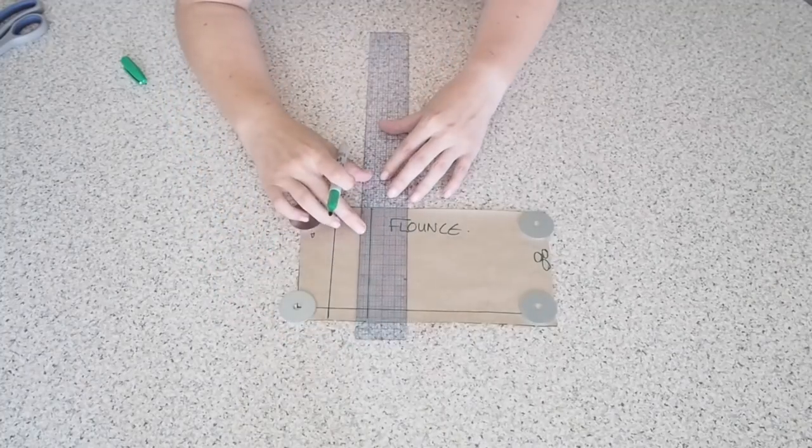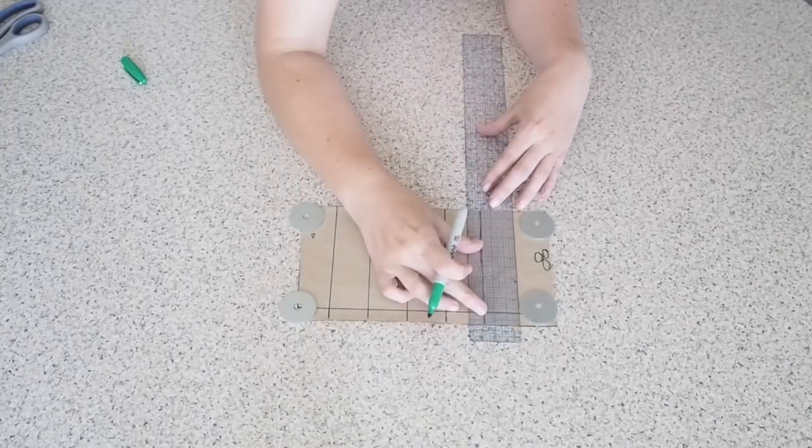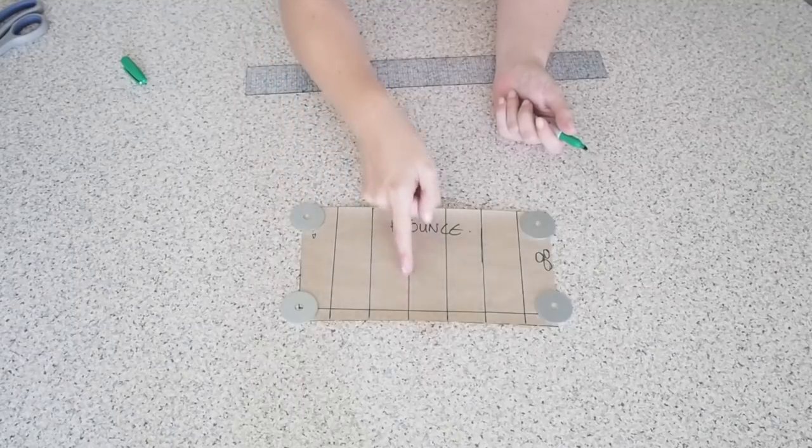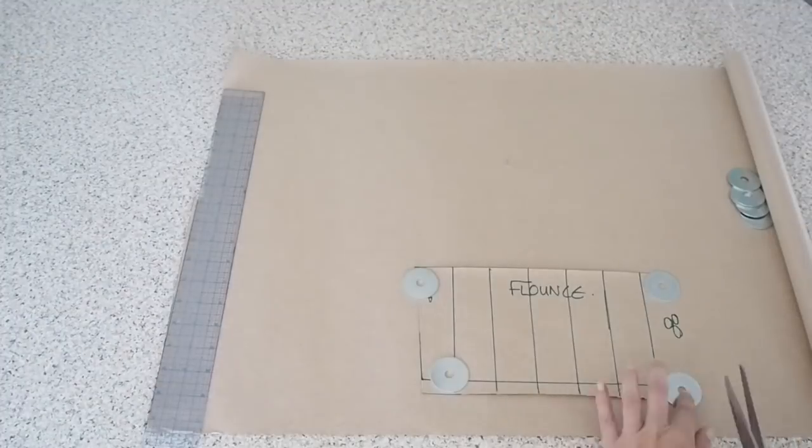And now to open up my flounce I'm just drawing vertical lines at one and a half inches apart the whole way across my pattern piece. Now they don't have to be one and a half inches apart, I just want mine to be equidistant in this pattern.